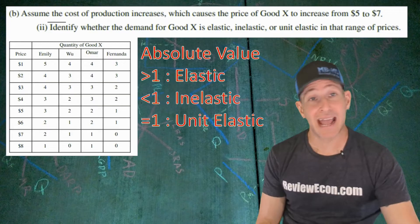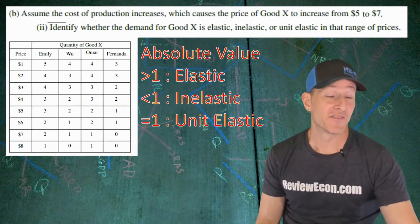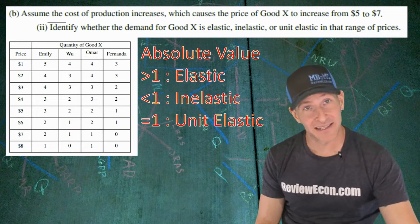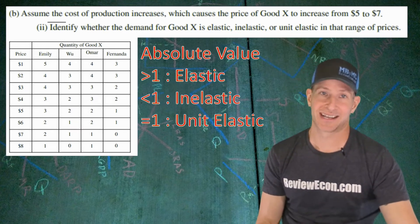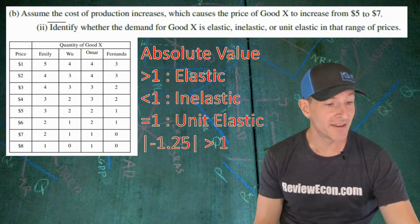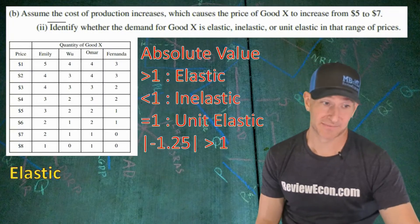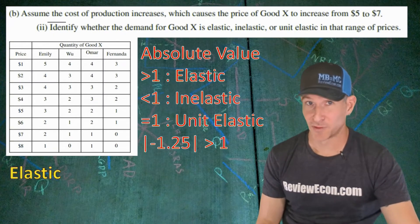And if you drop the negative, an absolute value that is greater than 1 will be elastic. If it's less than 1, that's inelastic. And if it's equal to 1, that's unit elastic. Since we had an elasticity coefficient of negative 1.25, and that is an absolute value greater than 1, that means the demand curve is elastic. And all you have to do is identify it to get the point.